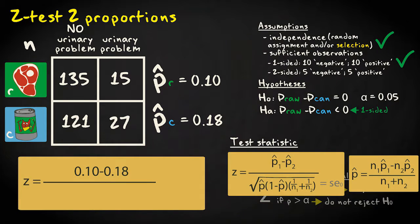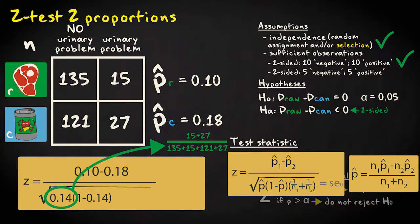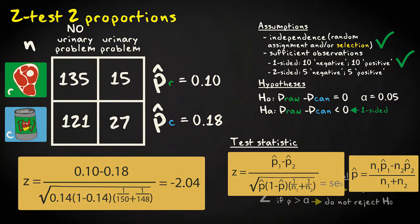The test statistic value is 0.10 minus 0.18 divided by the square root of 0.14 times 1 minus 0.14, where 0.14 equals all 42 cats with urinary problems divided by the total of 298 cats, times 1 divided by 150 plus 1 divided by 148. This equals minus 2.04.